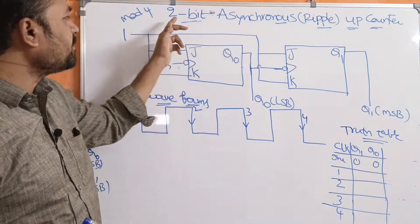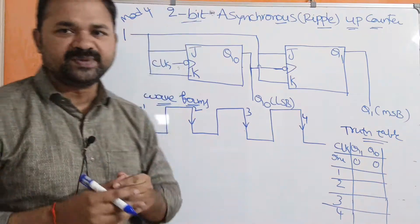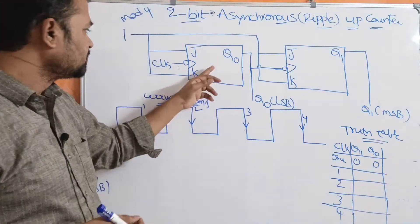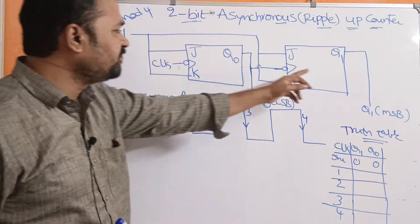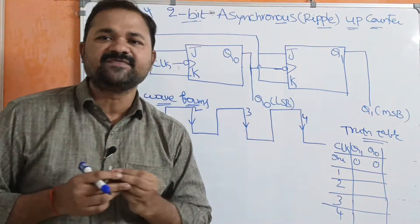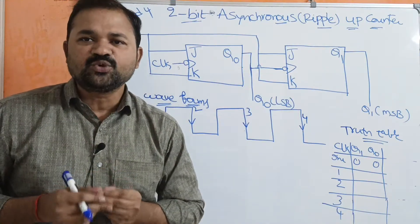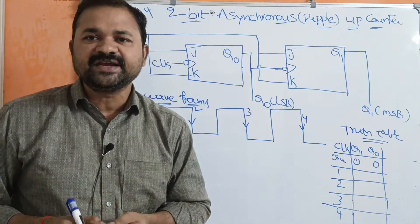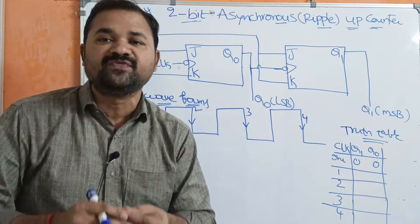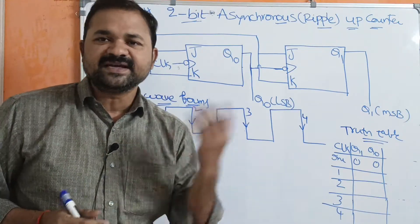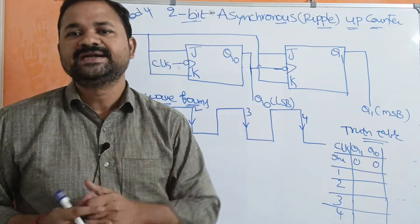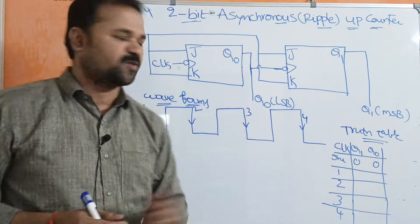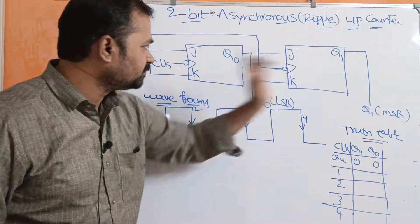Here, the counter capacity is 2 bits, so we need 2 flip-flops — this is the first flip-flop and this is the second flip-flop. In order to implement counters, we must use a toggle flip-flop. It may be either a JK flip-flop or a T flip-flop. Here we are using the JK flip-flop.